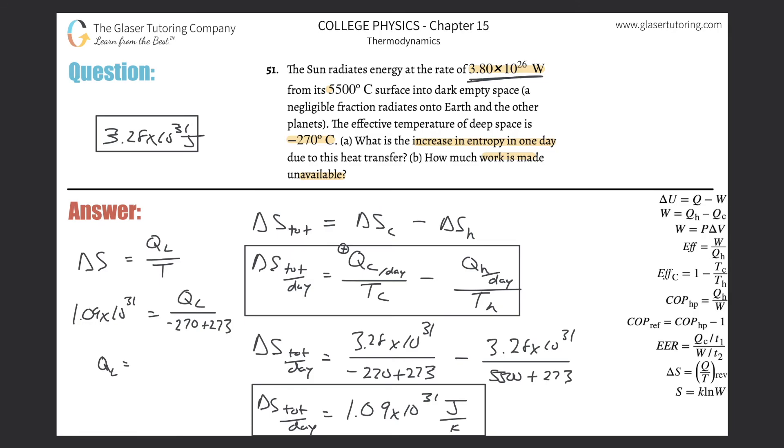So now we'll take that value, that exact value 1.09 times 10 to the 31st, multiply it by now parenthesis negative 270 plus 273, which is basically just times 3. So there's going to be about 3.28 times 10 to the 31st joules.